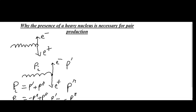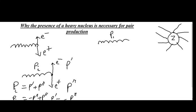We can save this conservation when there is a heavy nucleus nearby. That is, we have a photon moving with momentum Pi and a heavy nucleus with atomic number Z. Since the nucleus is positively charged, there is a strong electric field nearby, and due to this strong electric field a virtual photon is emitted from the nucleus with momentum exactly equal to minus Pi.